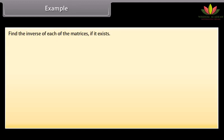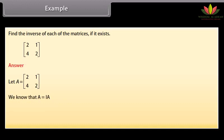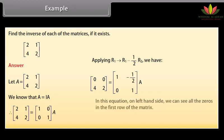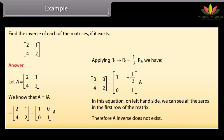Example: Find the inverse of the given matrix, row-wise first row [2, 1], second row [4, 2]. Let the given matrix be A. We know A can also be written as A = I·A. Applying R1 → R1 − (1/2)R2, we get first row [0, 0], second row [4, 2]. In this equation the left-hand side has all zeros in the first row, therefore A inverse does not exist.